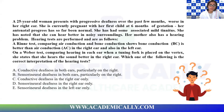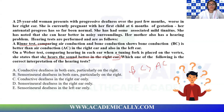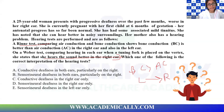Next question: A 25-year-old woman presents with progressive deafness over the past few months, worse in the right ear. She is pregnant at six months gestation. She has mild associated tinnitus and notes she can hear better in noisy surroundings. Her mother also had a hearing problem. Hearing tests show bone conduction is better than air conduction in both the right and left ears. Weber's test lateralizes — she hears the sound better in the right ear.